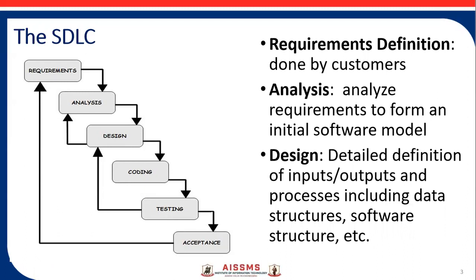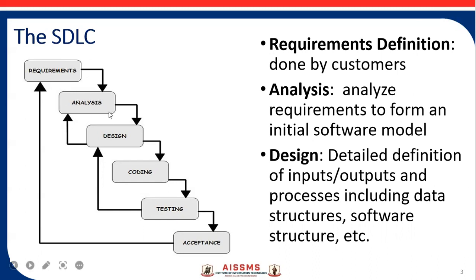Once the requirements are gathered, the second phase is analysis. In the analysis phase, the software development team analyzes the requirements to form an initial software model. Here we develop the SRS — that is the Software Requirements Specification — which is needed for all the next phases.